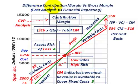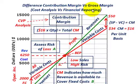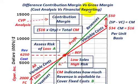What we're going to be going over here is the difference between the contribution margin versus gross margin. The contribution margin is used in cost analysis, whereas the gross margin is what we use in financial reporting.